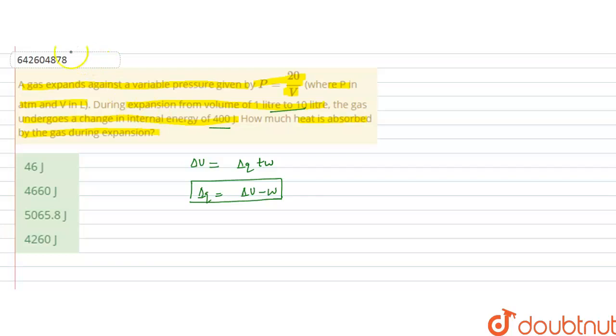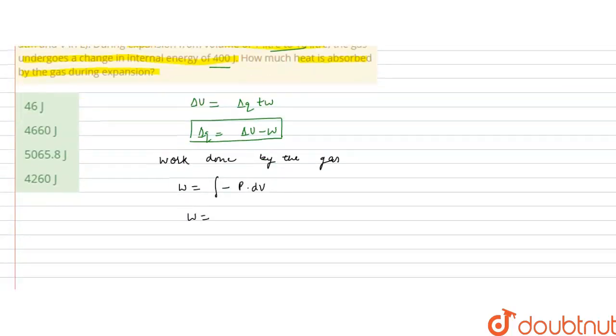So work done by the gas will be calculated as, now it is given a variable pressure, so it will be integration of minus PdV. Now this pressure we are given is 20 by V, so it will be integration of minus 20 by V dV. This minus 20 is constant, so it will be outside and this is dV by V. Integration of dV by V is ln V.